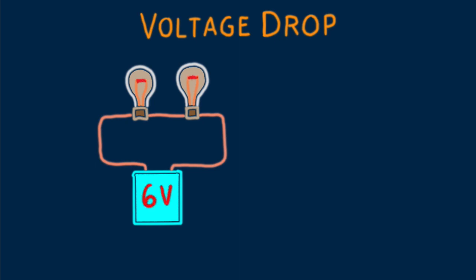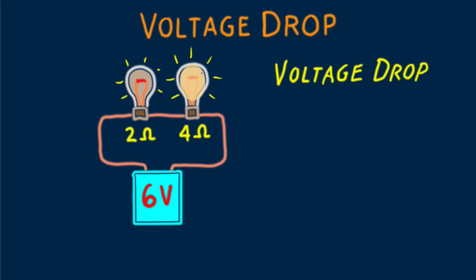Our battery here is 6 volts. To keep the numbers simple, our bulbs have resistances of 2 ohms and 4 ohms. Note the bulb with a higher resistance is brighter. We'll see that's because there's more voltage across it compared with the lower resistance bulb. So let's discuss the voltages across each of these bulbs. Voltage drop.